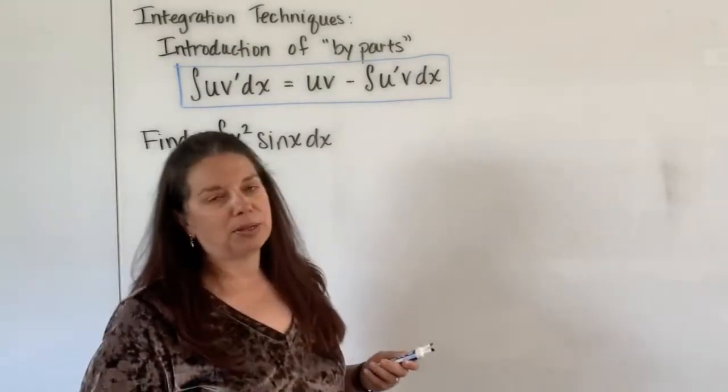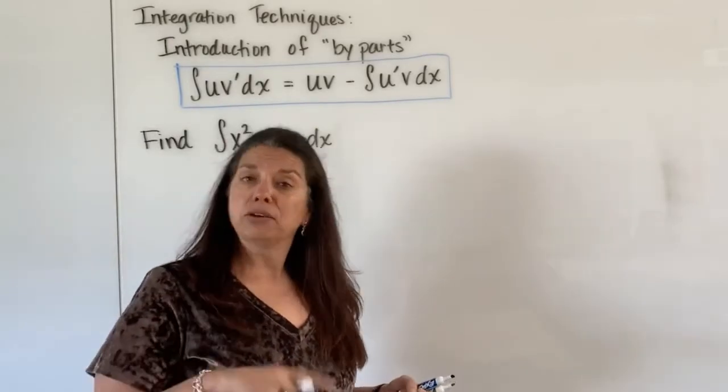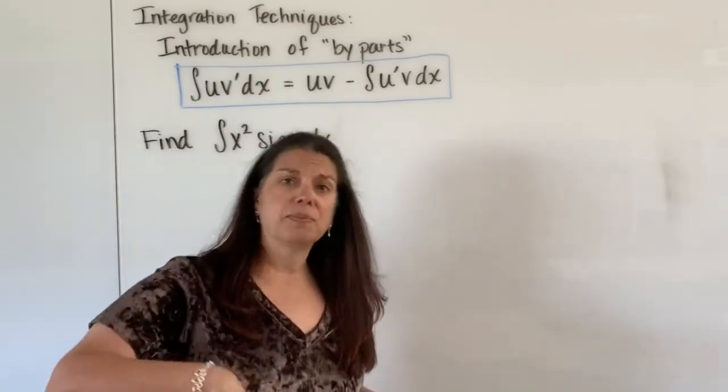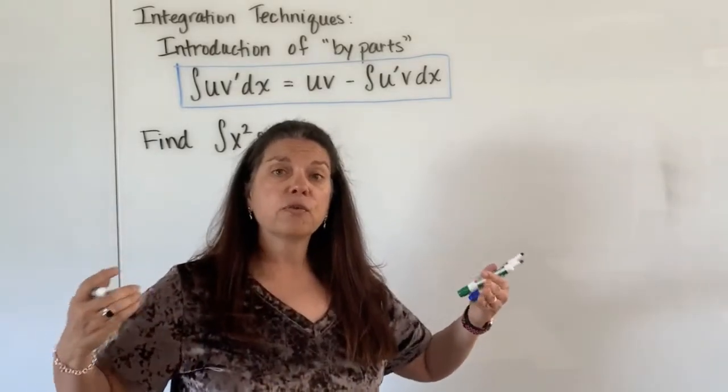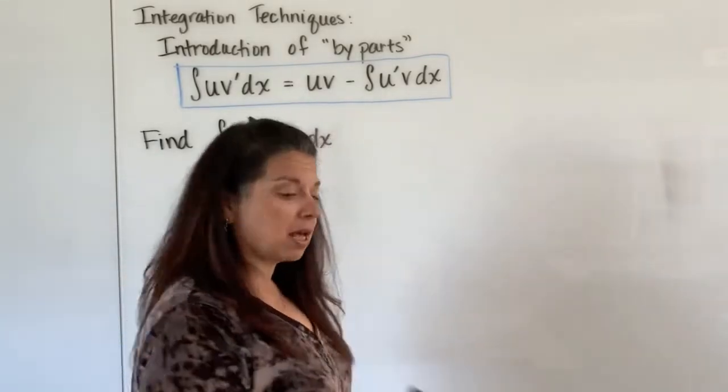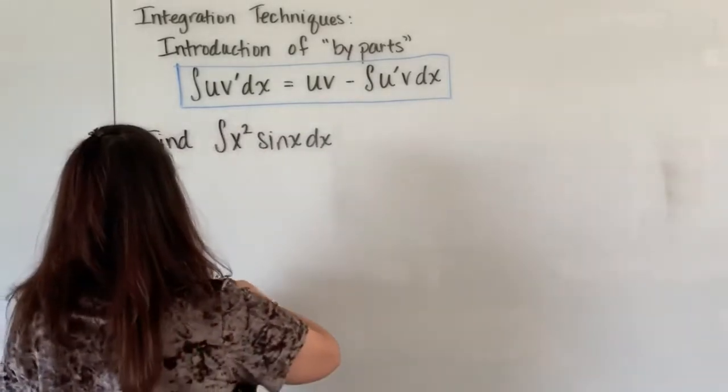But just like the last problem we need to identify what my u's are, my u primes, my v primes, my v's, all that stuff so that we can then put it in the form of the by-parts formula. So that's the key here.